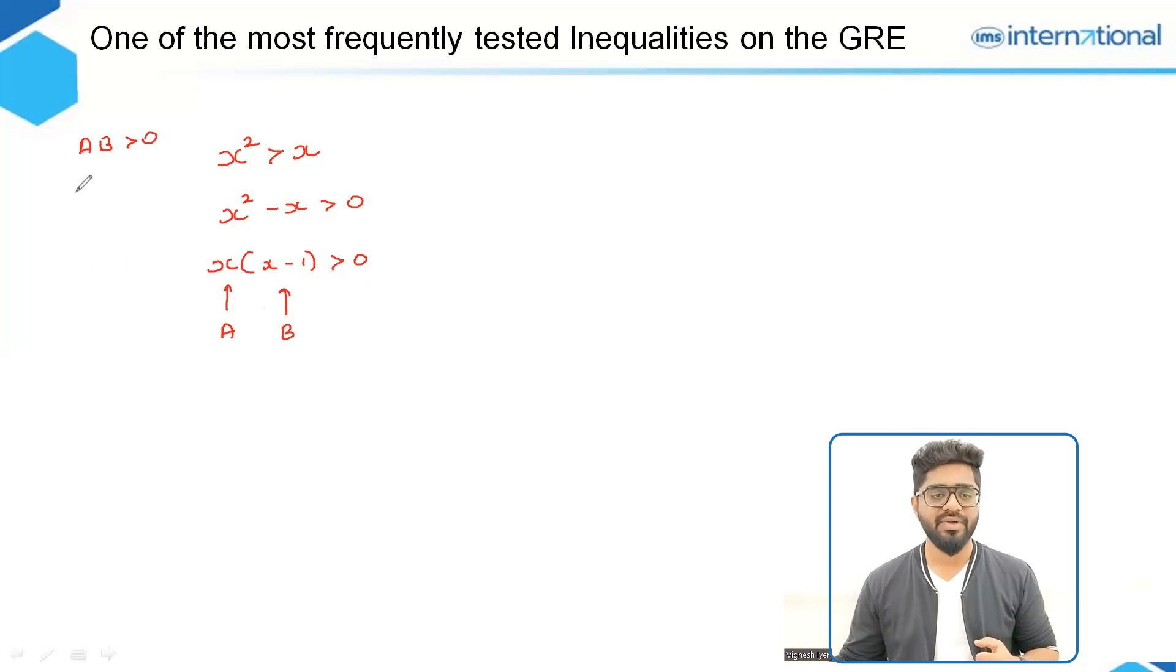For example, if A is positive, then B has to be positive because the product of two positive numbers is positive. Similarly, if A is negative, then B also has to be negative because the product of two negative numbers is also positive.